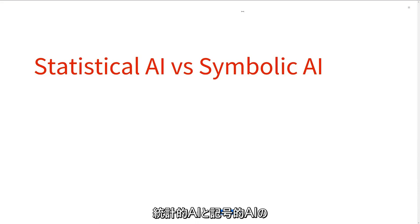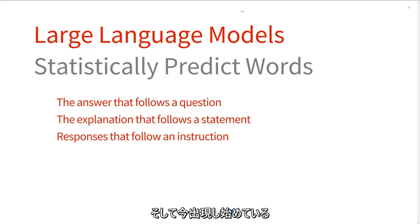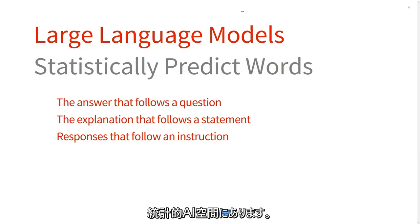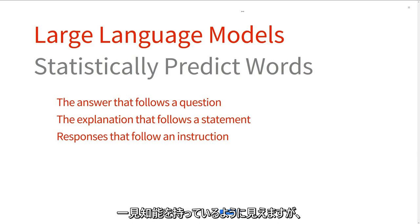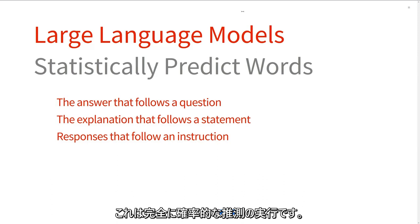Let me try and define the difference between statistical AI and symbolic AI. The large language models — ChatGPT, BARD, and the whole collection of these things appearing at the moment — are in the space of statistical AI in that, while they have this appearance of intelligence, fundamentally they're doing one very simple thing: predicting the next word that follows some previous words. So it's an entirely probabilistic guessing exercise.